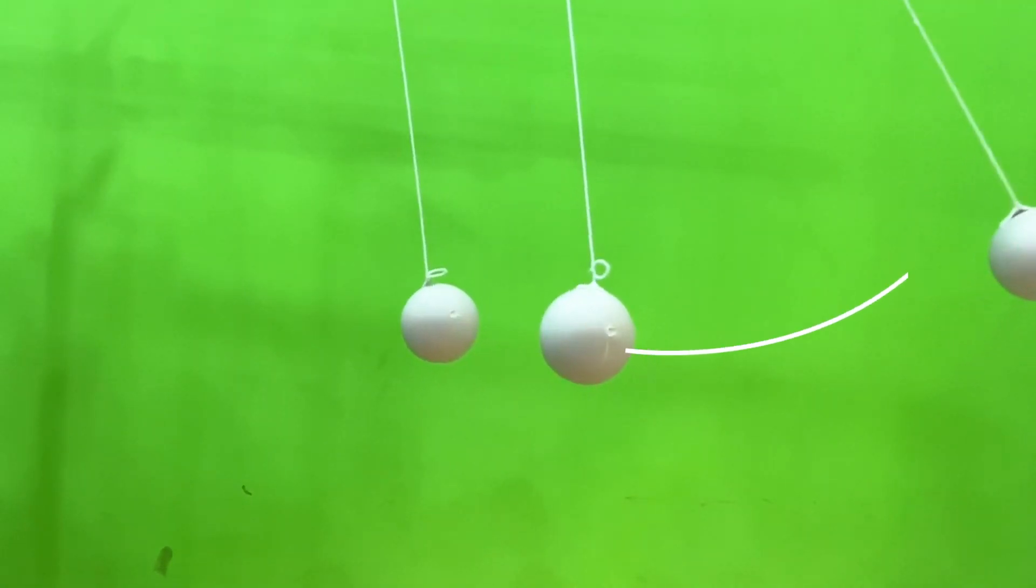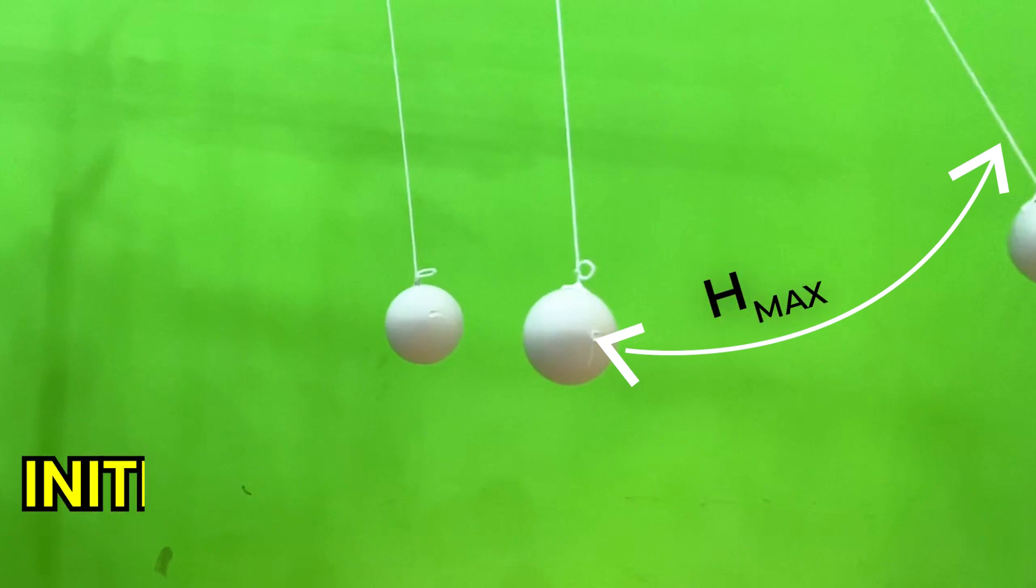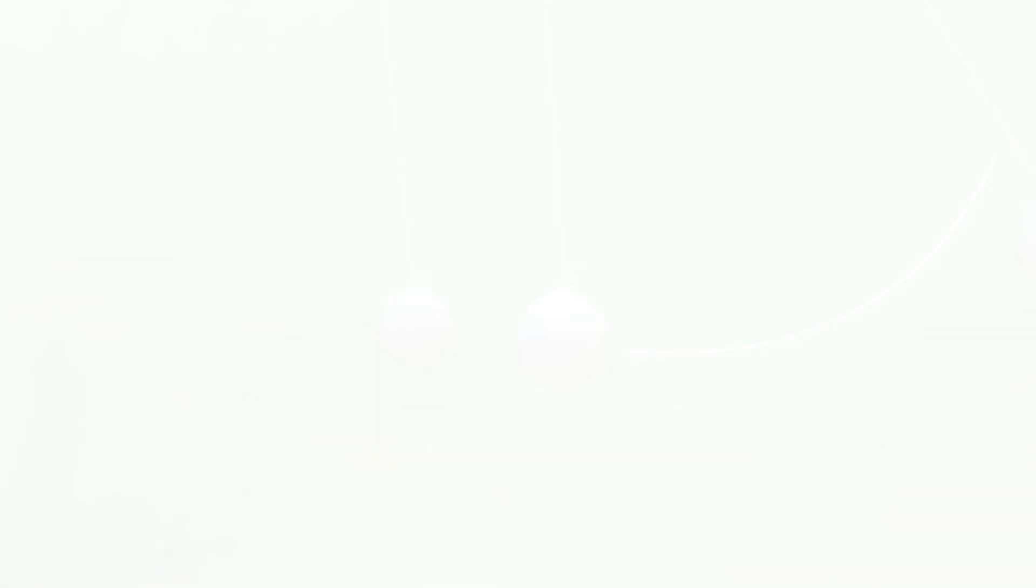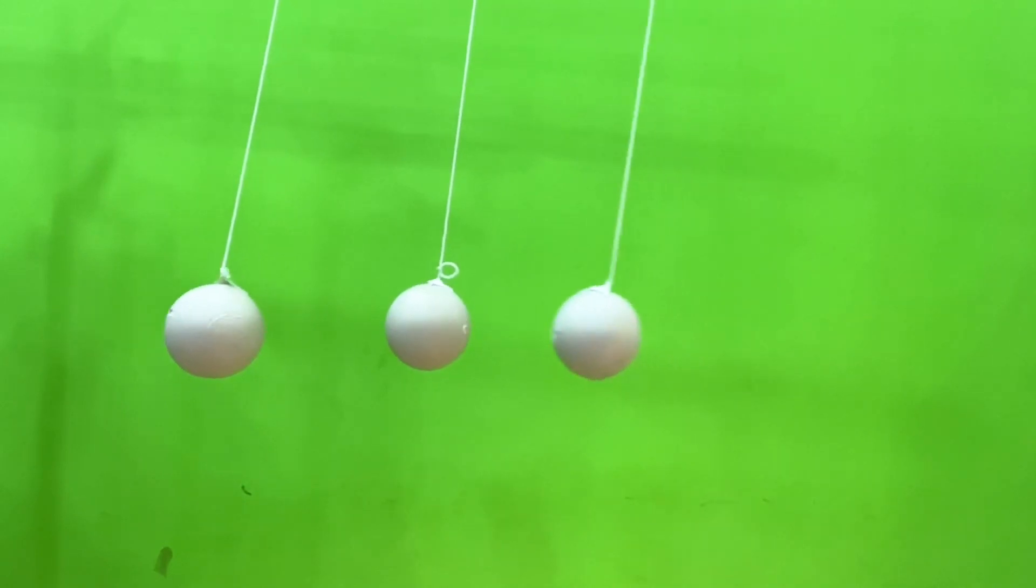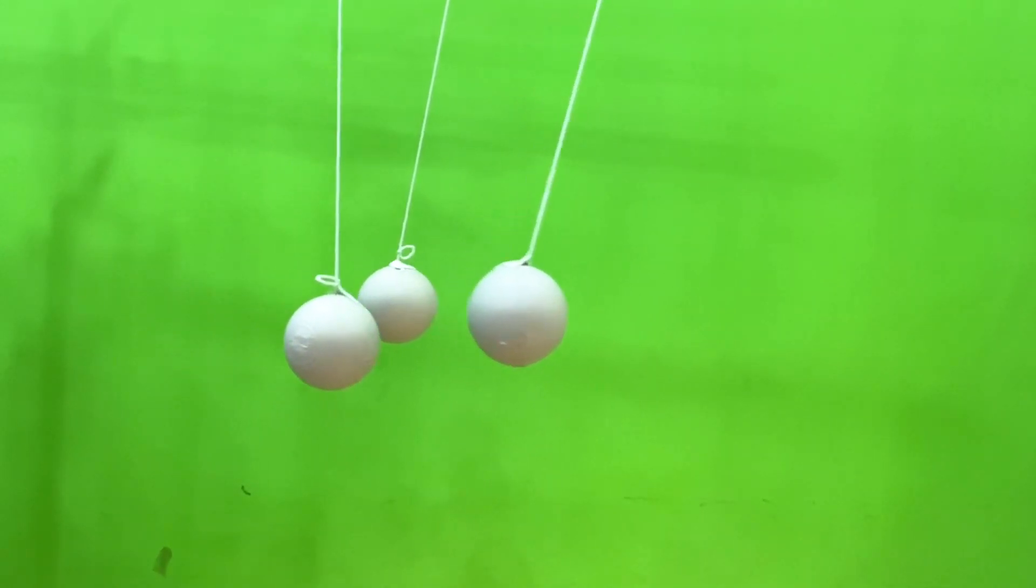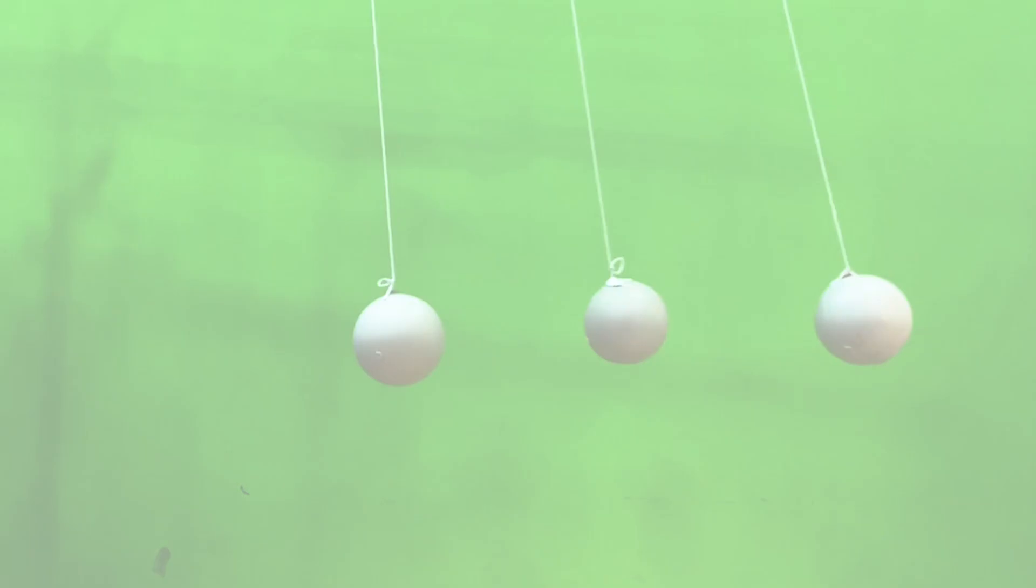Now when the second ball hits the third ball, it swings to the maximum height. This means the initial kinetic energy is converted to gravitational potential energy. Now the momentum changes due to the external forces like gravity and tension, which means the linear momentum is not conserved.